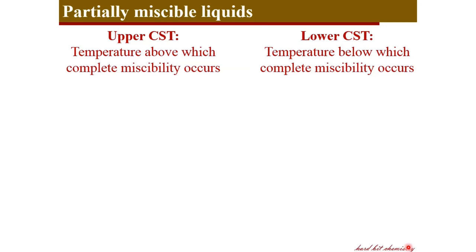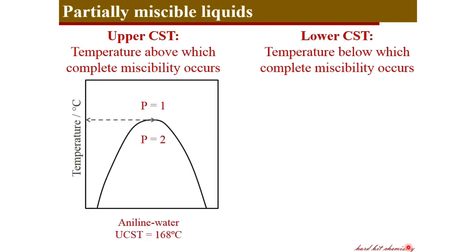Based on critical solution temperature, you can have two types of systems. The first, like aniline and water: above a temperature of 168°C, the two liquids become completely miscible and you have only one phase. But below this temperature, certain compositions form two separate layers. So the upper critical solution temperature (UCST) is the temperature above which any composition of the two liquids becomes completely miscible.